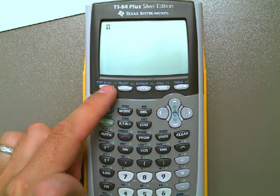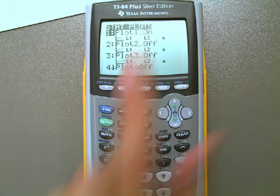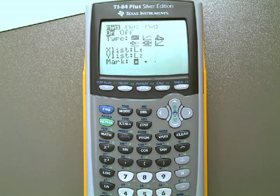So the first thing to check is, if I go to second stat plot, I'm going to look and see, and it does look like that I'm trying to plot data here, so there's the first step to fixing this error. I'm going to go ahead and turn that data plot off and hit enter.